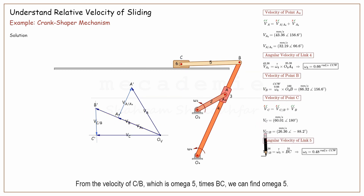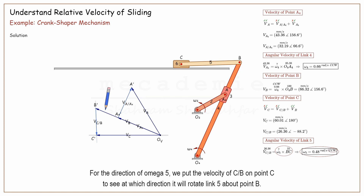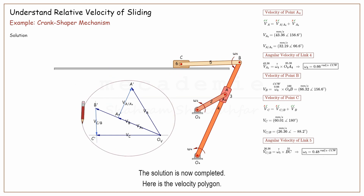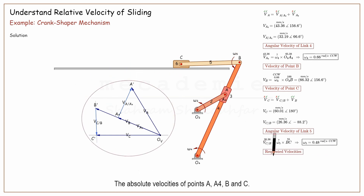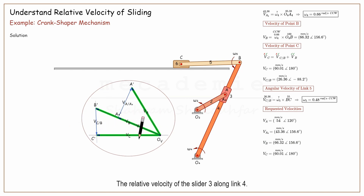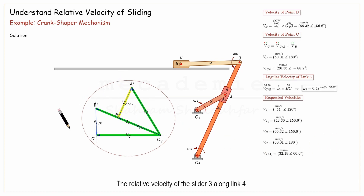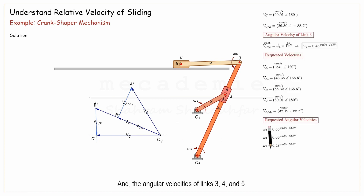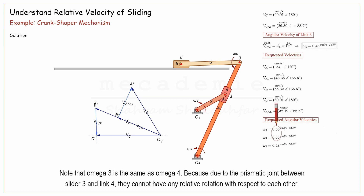From the velocity of C with respect to B, which is omega 5 times BC, we can find omega 5. For the direction of omega 5, we put the velocity of C with respect to B on point C to see at which direction it will rotate link 5 about point B. The solution is now completed. Here is the velocity polygon with the absolute velocities of points A, A4, B, and C, the relative velocity of slider 3 along link 4, and the angular velocities of links 3, 4, and 5. Note that omega 3 is the same as omega 4, because due to the prismatic joint between slider 3 and link 4, they cannot have any relative rotation with respect to each other.